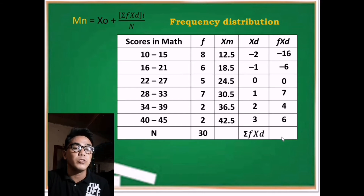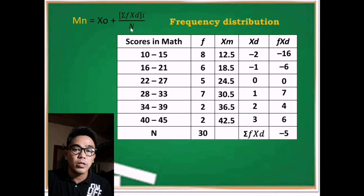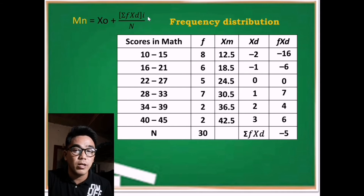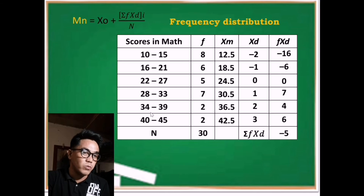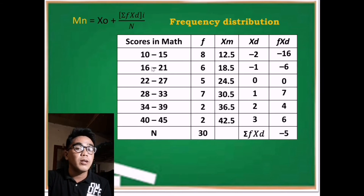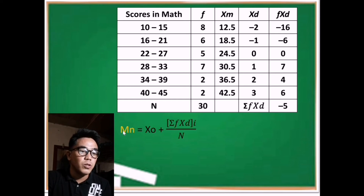For capital N, simply add all the frequencies: 8 plus 6 plus 5 plus 7 plus 2 plus 2 equals 30. For the class size i, subtract the lower limit from the upper limit in any class interval and add 1. For example, 33 minus 28 is 5, plus 1 is 6. Therefore the class size is 6.